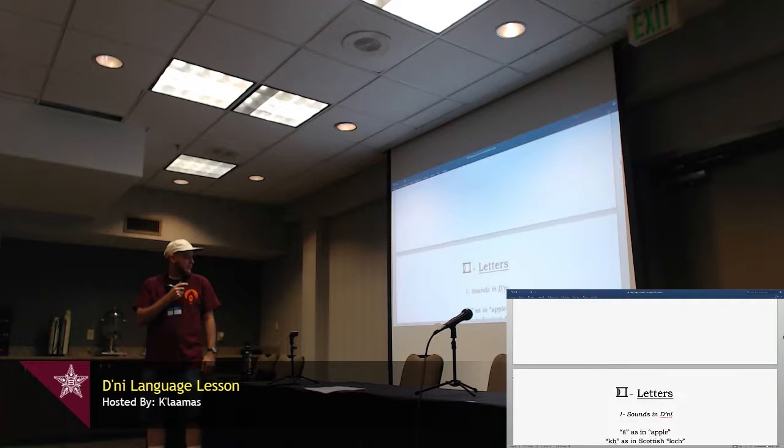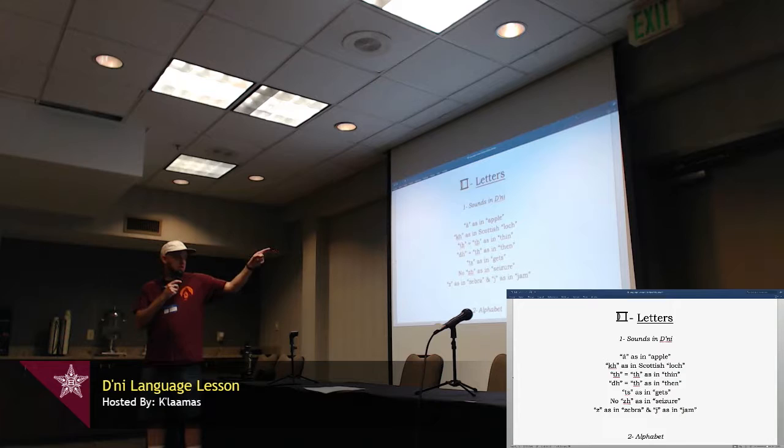So, the letters, there are a few unique sounds. There's a specific A as in apple, an uncommon sound, but it is distinctly different from A or A, or any other ones that we use the letter A for. There's a H, and then the two different TH sounds. In English, we use the same two letters, but in linguistics, they do a TH and a DH. Then, D'ni has a separate S sound that's actually at the start of a number of words. There's no J sound like in seizure. It's either J or Z.